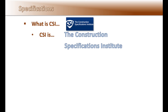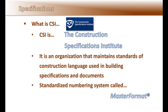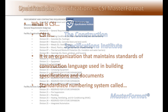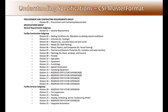Specifications are written using a system called Master Format, developed by CSI — the Construction Specifications Institute — which is an organization that maintains standards of construction language used in building specifications and documents. Master Format is a standardized numbering system with 50 divisions, starting with Division 00 for procurement and contracting requirements, and 49 other divisions covering all the trades and materials used in construction.